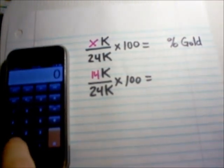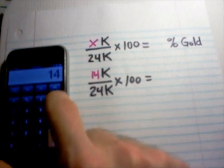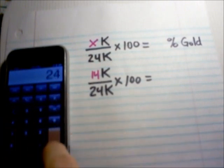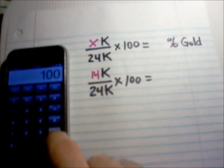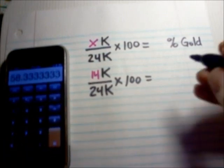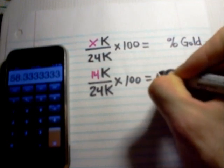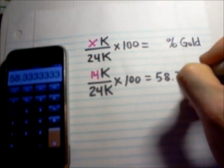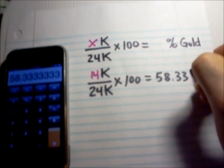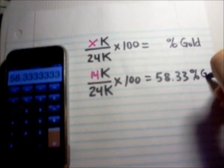So, we'll have 14 divided by 24 times 100. And that's going to equal 58.33% gold.